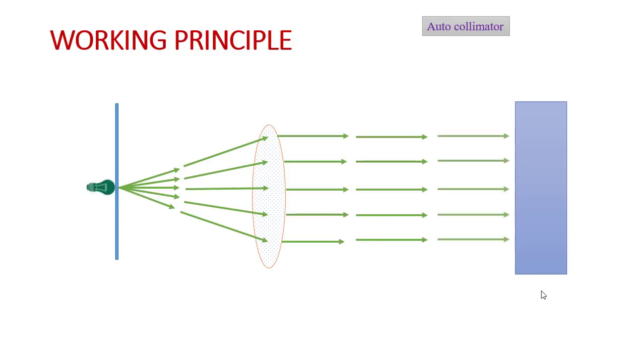In front of the collimating lens, there will be a reflector plane. This reflector plane axis will be normal to the collimating lens axis, and this will reflect the light rays perpendicular to the reflector plane. Then it will be projected on the collimating lens and these light rays converge at the point of source O.